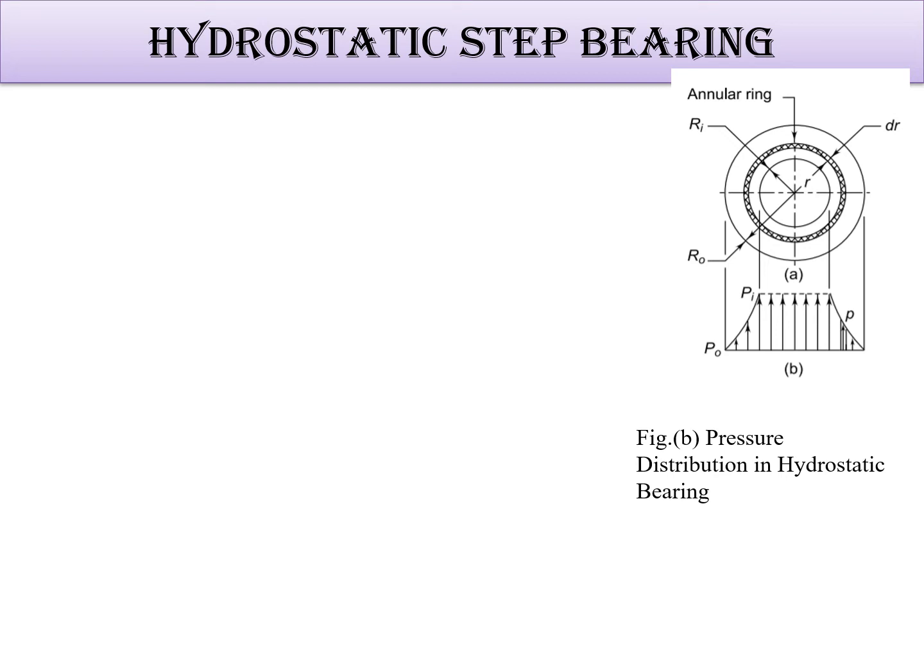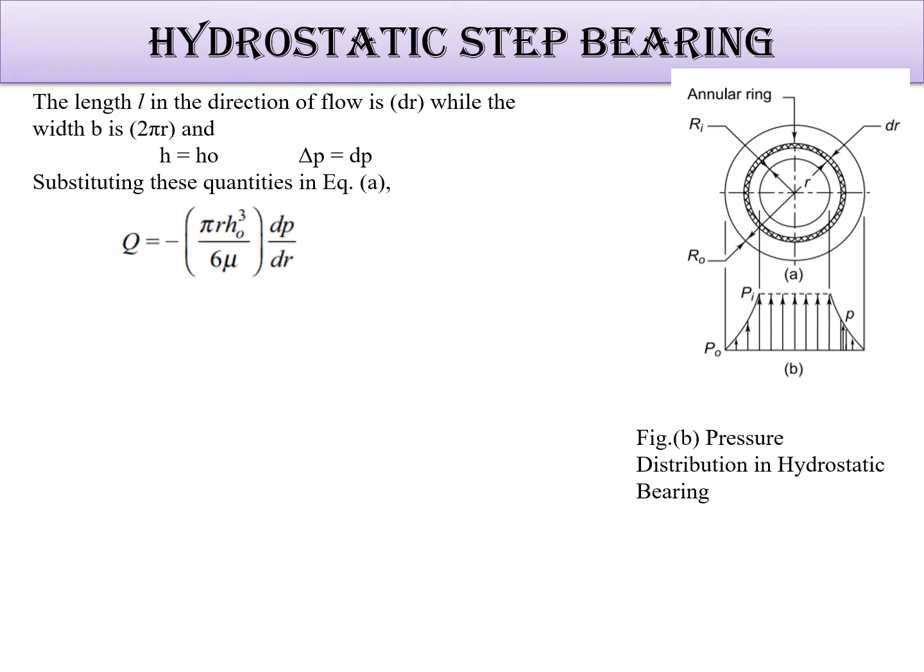Now l in the direction of flow is dr, b is 2πr, and h is equal to h0, and delta p is equal to dp. Now putting this value in equation a, so Q will become minus πr h0³ divided by 6μ dp by dr.